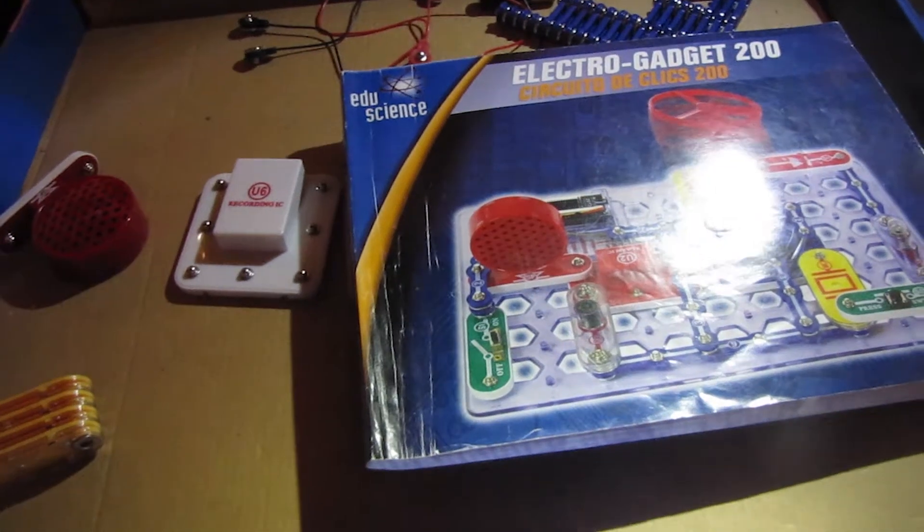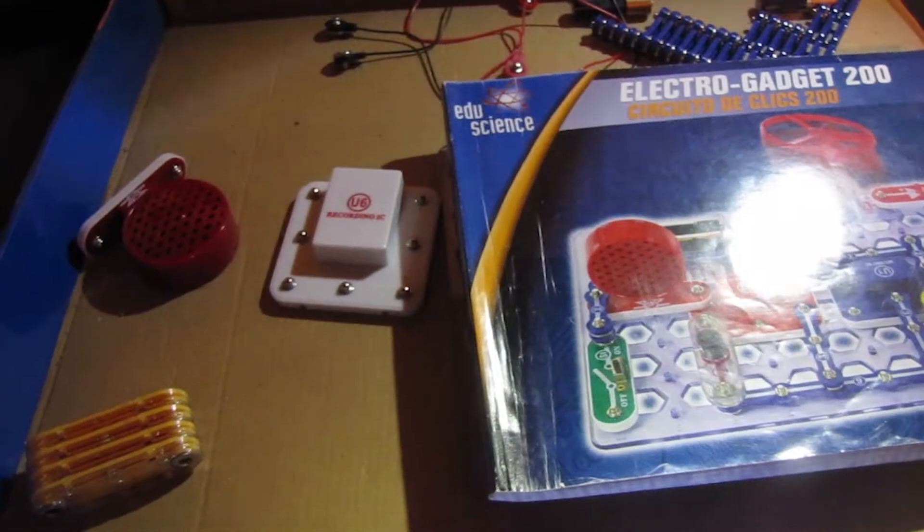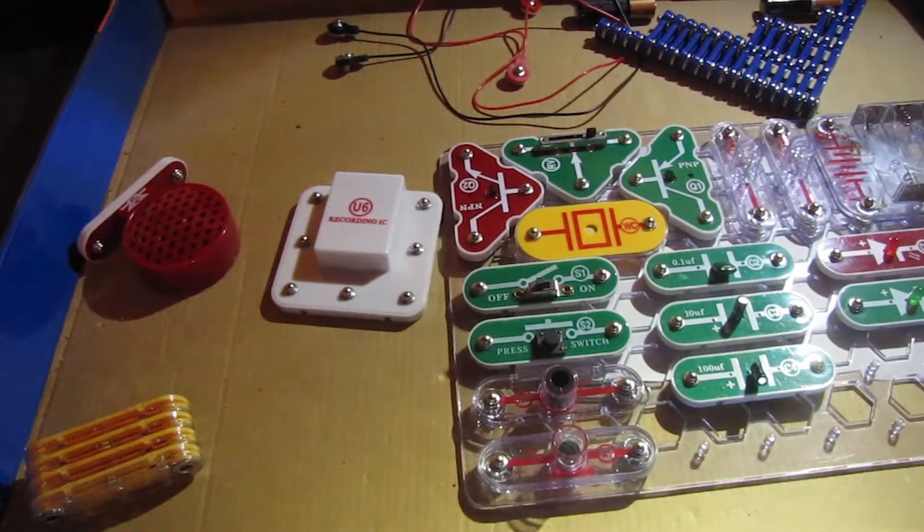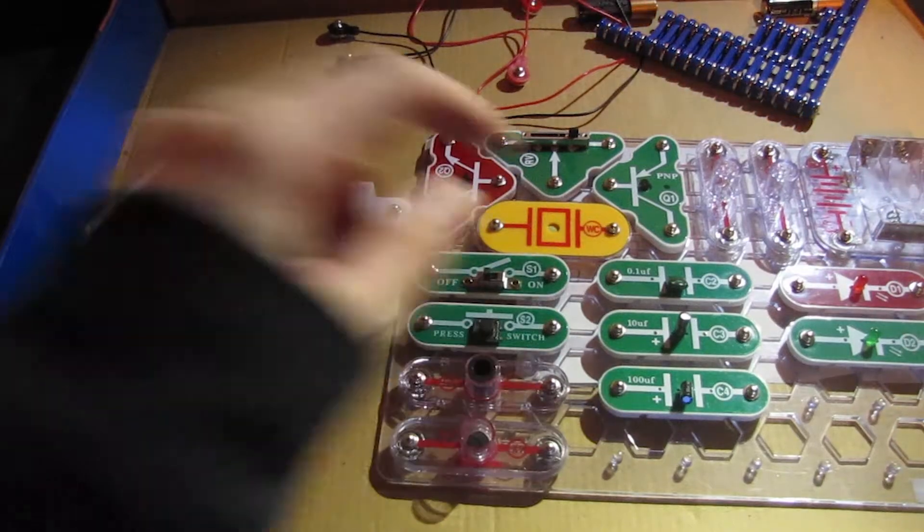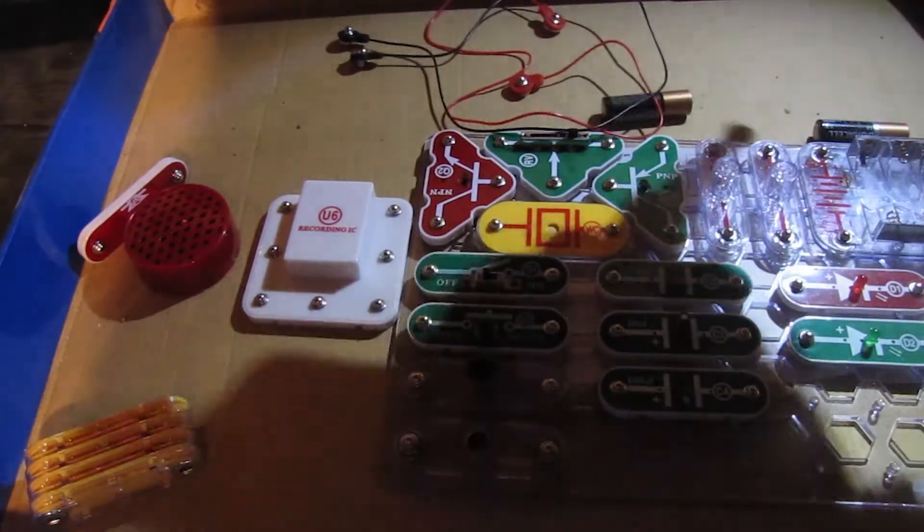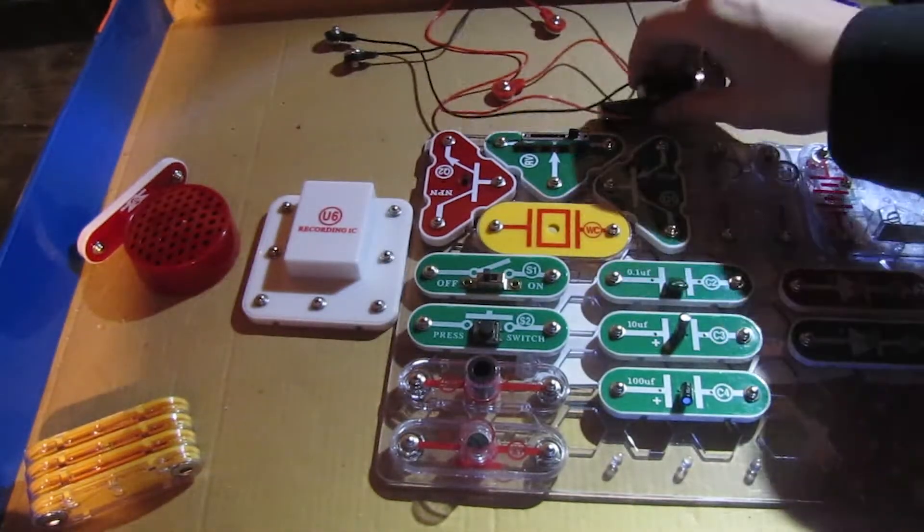All right, we're back. So this is the majority of the parts in here. As you can see, I now store them on the base grid, which is down here. So let's take a quick overview of the parts. We got our solid snap wires here. Ignore these batteries for now.